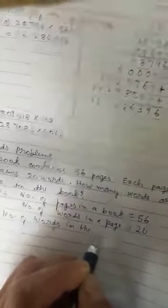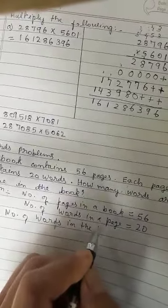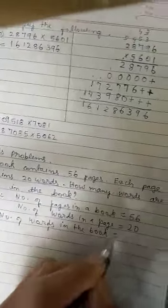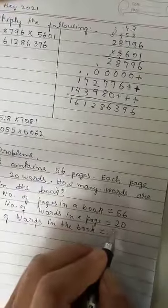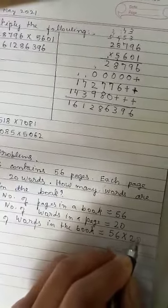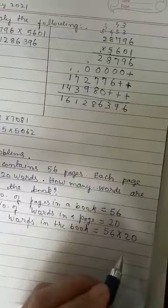So remember because we have 56 pages, that means a big book. And then each page it have 20. So that means we want more. So when we want more, what to do? We have to multiply. Then you do by the side.